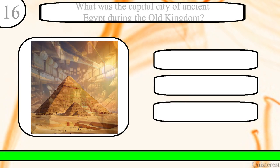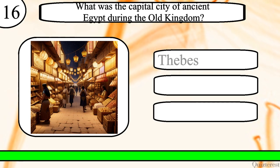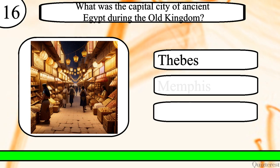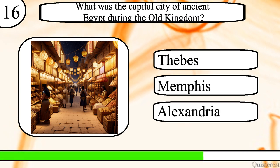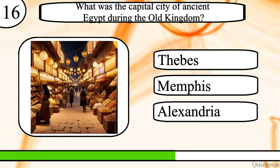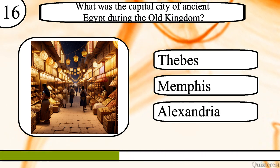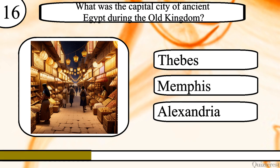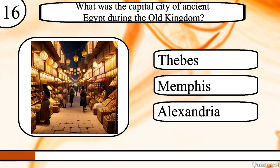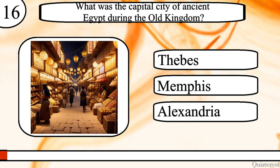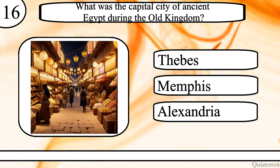Question 16. What was the capital city of ancient Egypt during the Old Kingdom? Thebes, Memphis or Alexandria? The correct answer is Memphis.